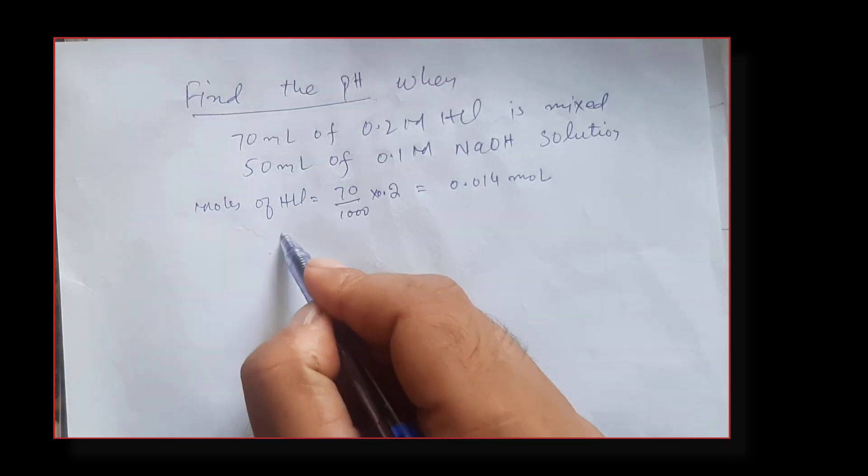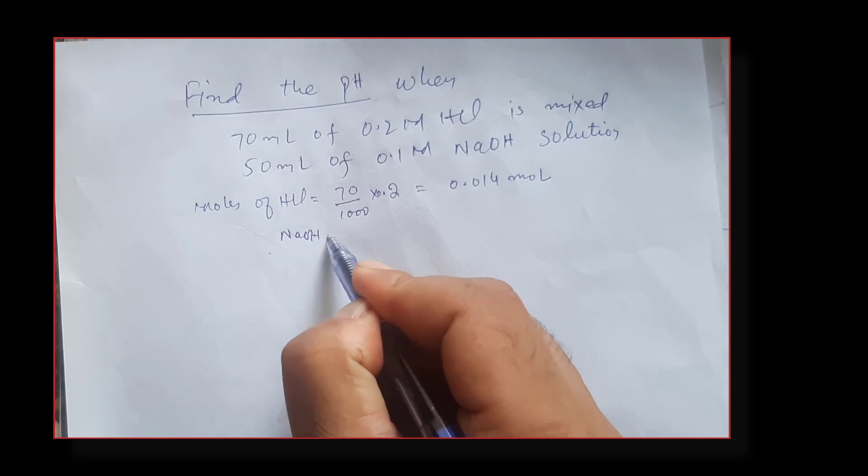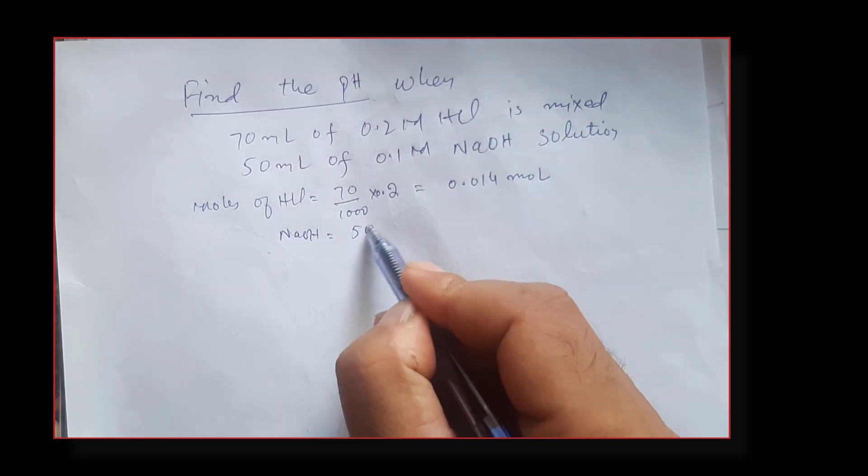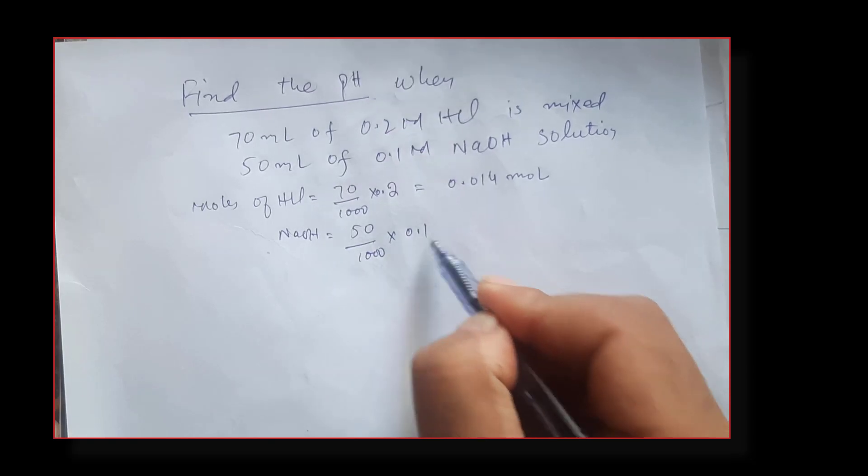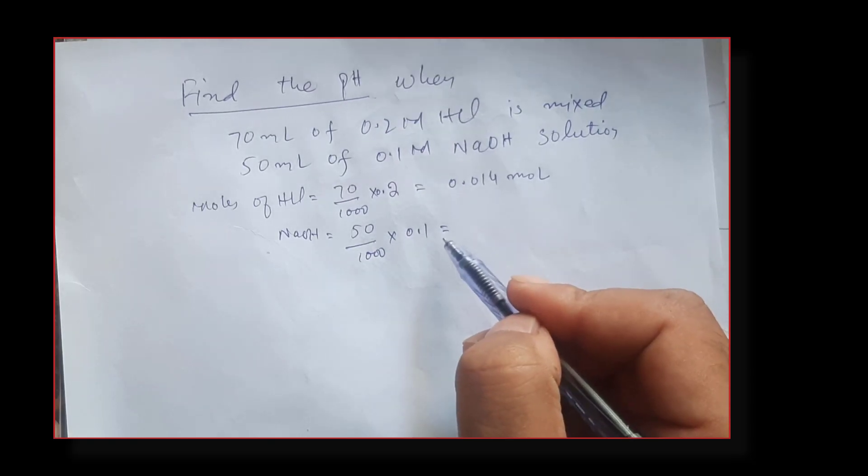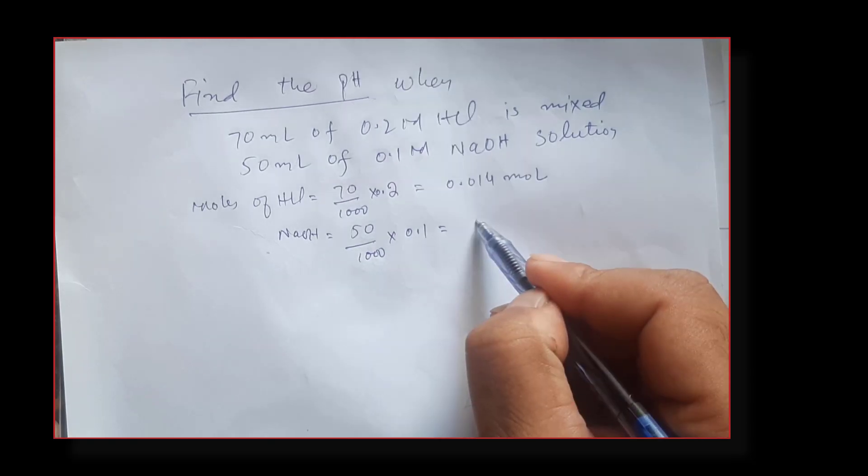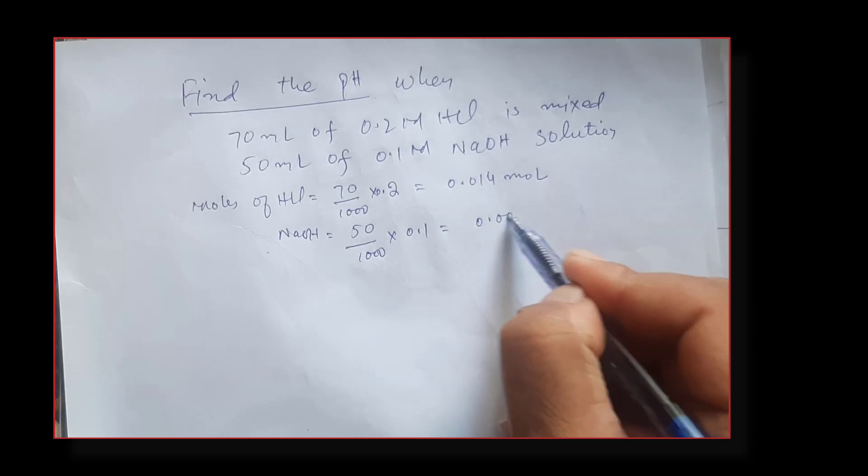Similarly, the number of moles of sodium hydroxide: 50 divided by 1000, multiply by 0.1, and this gives us 0.005 mol.